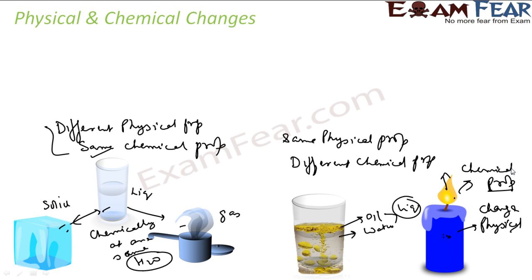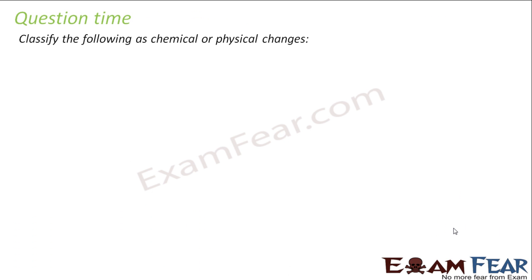So when burning a candle, the wax is converted to heat energy — that is a chemical change. The solid wax converting to liquid wax is a physical change. Let's see more examples. Cutting of trees is a physical change — there is no chemical change involved. Melting of butter is also a physical change — the butter is the same substance whether in melted or solid form.